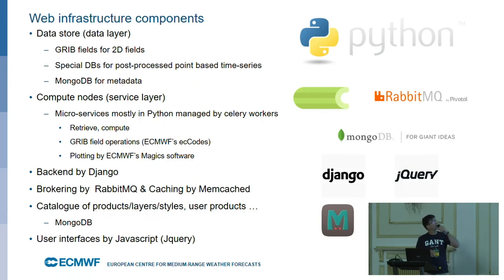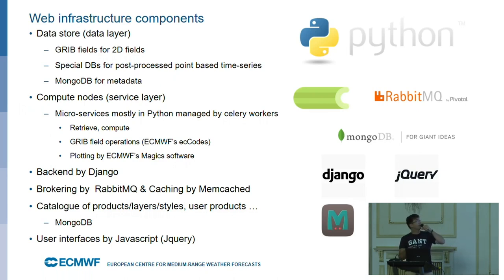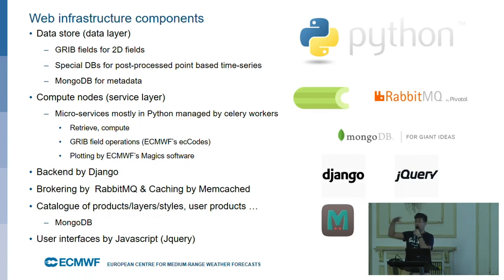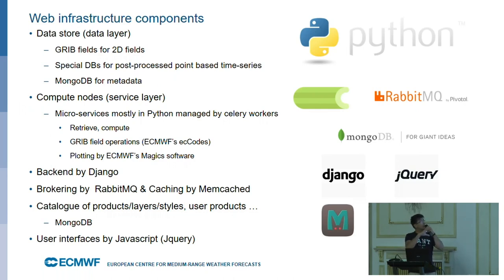To give you some information about our infrastructure: we run in-house a cluster of computers to host all those services. We have a data store that we call the data layer, and we store GRIB fields because our model automatically generates GRIB fields. GRIB is the format in the meteorological world governed by the World Meteorological Organization. We have spatial databases for time series data — we basically take all the meteorological fields and transform them into the time dimension so that they can be generated very quickly. We keep all the metadata in MongoDB. Then we have the compute nodes, which we call the service layer, where all the number crunching happens. We host and develop microservices mostly written in Python and managed by Celery workers.